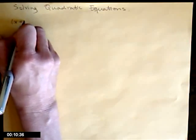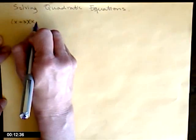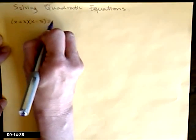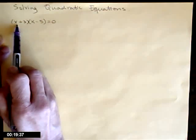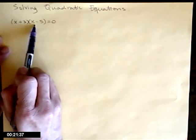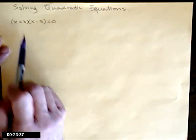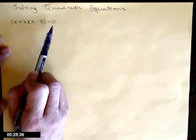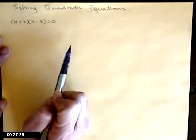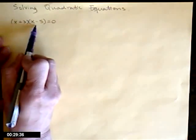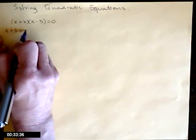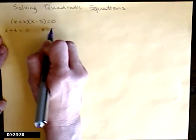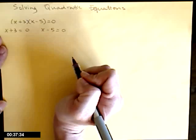If I have x plus 3 times x minus 5 equals 0, don't multiply those together — at this stage I have a multiplication problem. x plus 3 times x minus 5 equals 0. That's exactly where I want to be, because the only way these two can multiply to get 0 is if either x plus 3 equals 0 or x minus 5 equals 0.